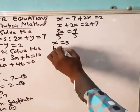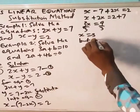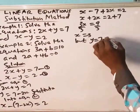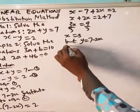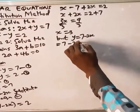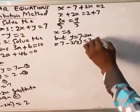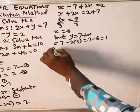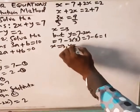But y is 7 minus 2x. Y is 7 minus 2x. So this is equal to 7 minus 2 times x, which is 3. That's 7 minus 2 times 3 is 6, which is 1. So x is 3 and y is 1.